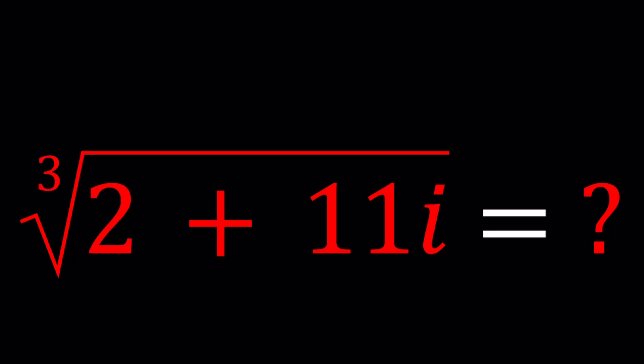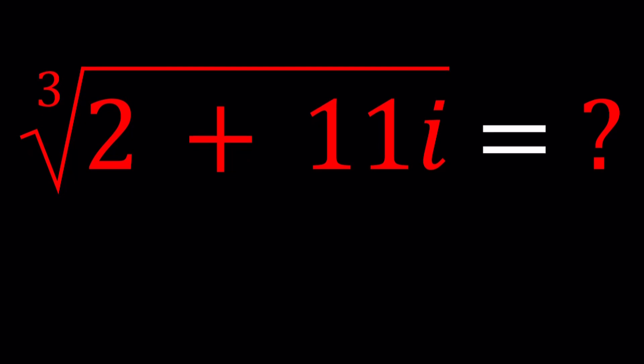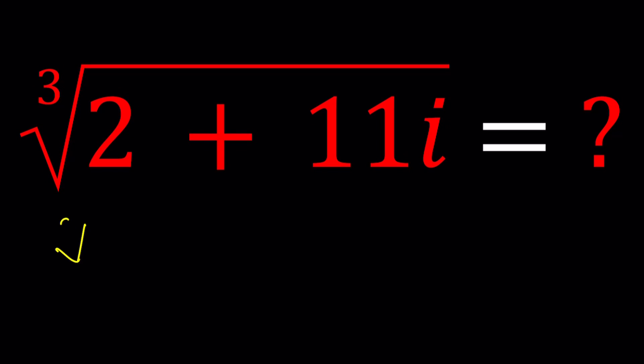So to be able to find the cube roots of this number, I'm going to set it equal to, guess what, A plus Bi - yes, the name of this channel. Now we're going to cube both sides, obviously. We want to find A and B values. A and B are real numbers, be careful about it.